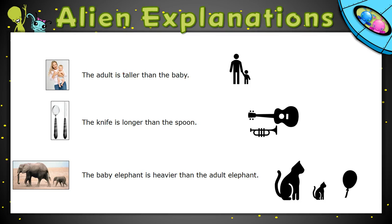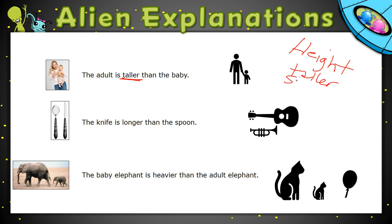I'm just going to review what some of these words mean. Here we're given the word taller. When we compare the height of things or people, we compare them using words like taller and shorter. The bigger one is the taller one. So in this case, the adult-looking figure is taller than this figure.